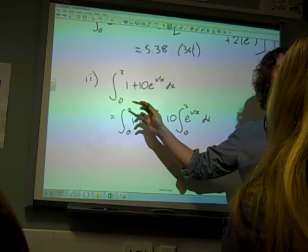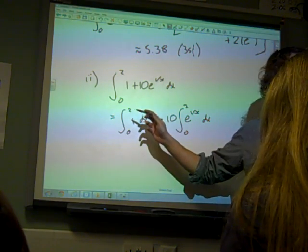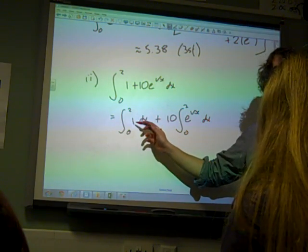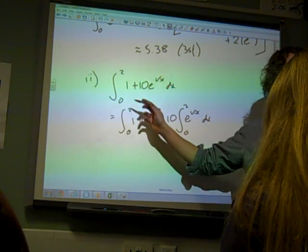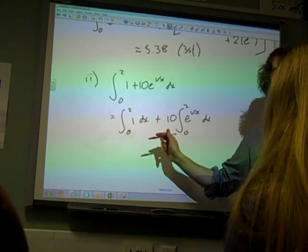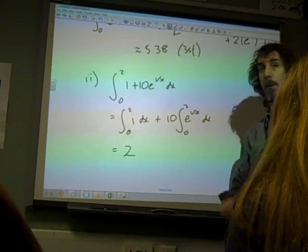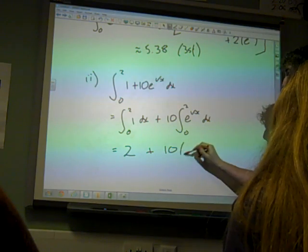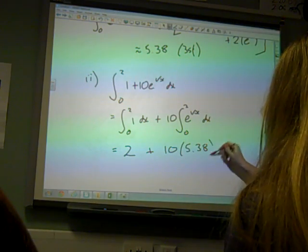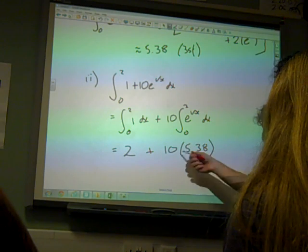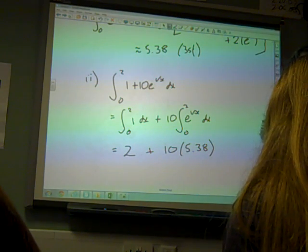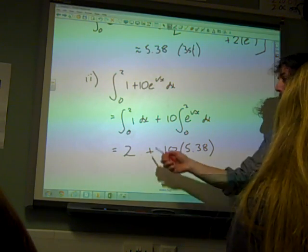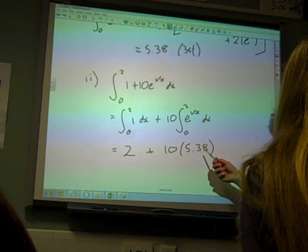Now the integral of 1 between 0 and 2 is 2. If you integrate 1, you get x. If you sub in the value, sub in 2, sub in 0 and subtract. That bit is worth 2. And this bit is 10 times our answer for part 1. So what we're looking for is 2 plus 10 times 5.38. And you get both of the marks if you do 2 plus 10 times your answer to part 1.